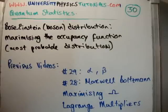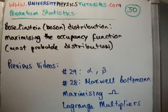In this video I'm going to continue on with my tutorials on quantum statistics. We're on video number 30. In this video I'm going to get the Bose-Einstein distribution for bosons, which means we're going to maximize the occupancy function, or get the most probable distribution. It's three different ways of saying the same thing.